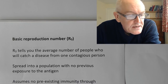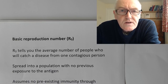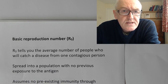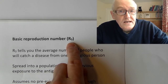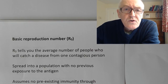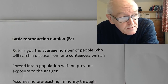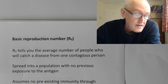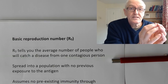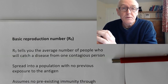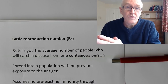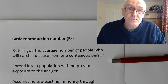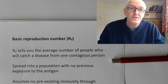Welcome to this talk on basic reproductive number. This is one of the concepts we need to understand if we're going to understand the nature of transmissible diseases and how diseases can spread through a population. The basic reproductive number is called R0 — that's how it's pronounced, R0. It tells you the average number of people who will catch a disease from one contagious person, and it is an average over a population.